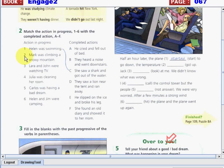What about number 2? Mark was climbing a snowy mountain. So what is the completed action? He slipped on the ice and broke his leg.